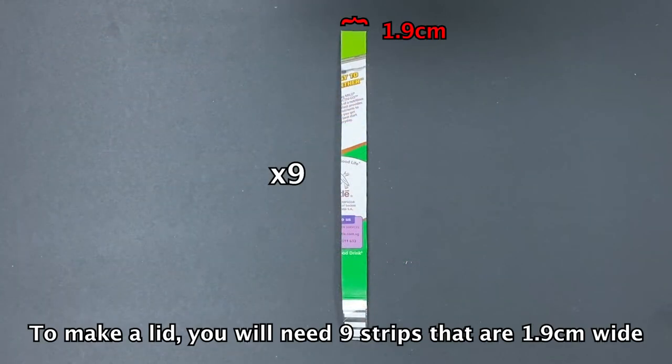To make a lid, you will need 9 strips that are 1.9cm wide.